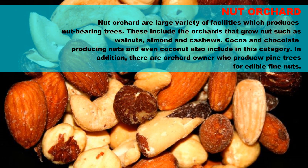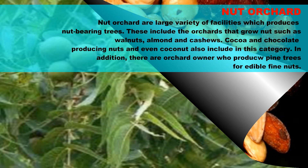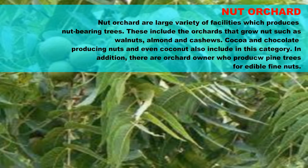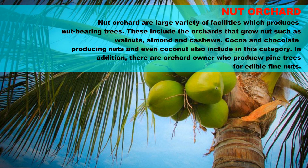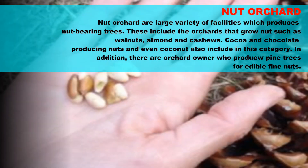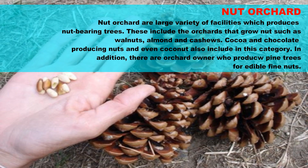Nut orchards are a large variety of facilities which produce nut-bearing trees. These include orchards that grow nuts such as walnuts, almonds, and cashews. Cocoa and chocolate-producing nuts, and even coconuts, are also included in this category.